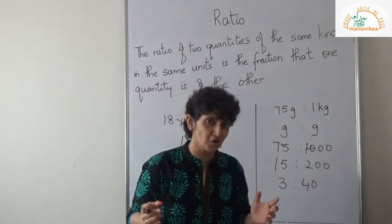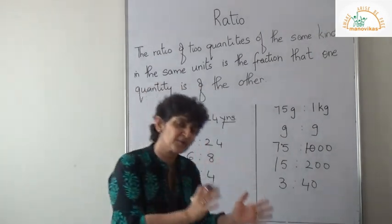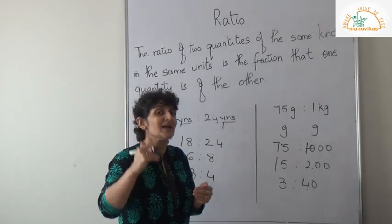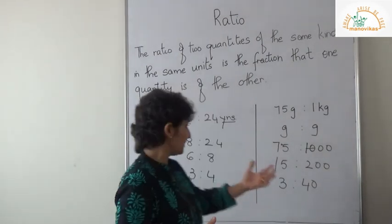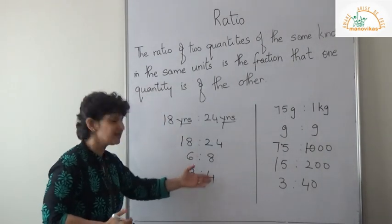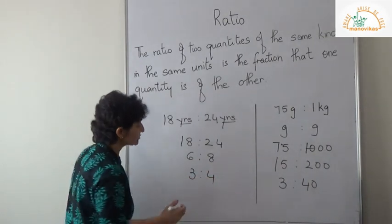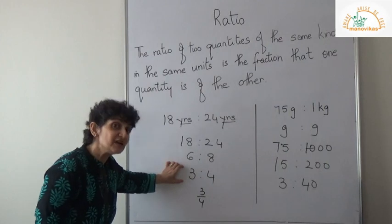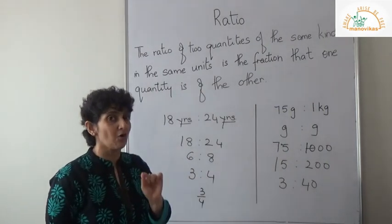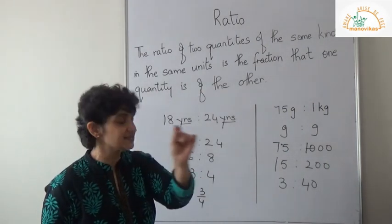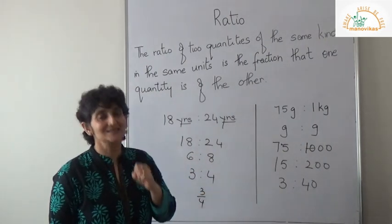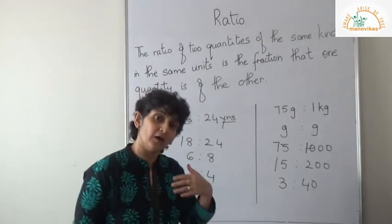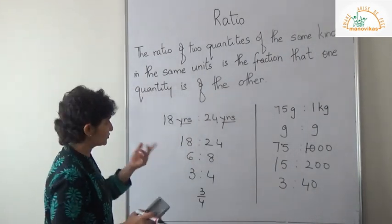Whenever you do ratios, they need to be in the same kind or same unit. Ratios can also be put in the form of a fraction. For example, 3 is to 4 also means 3 upon 4. So 3 is your first term and it is called the antecedent. 4 will be your second term and that is called the consequent. Now let us move on to the next question.